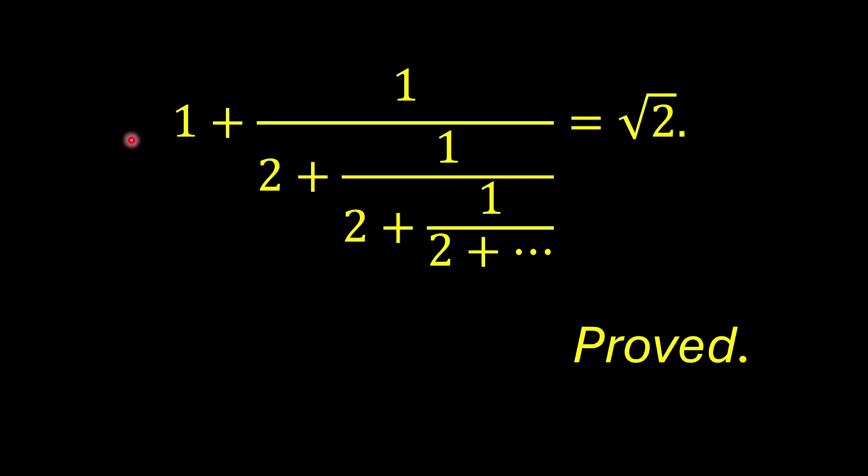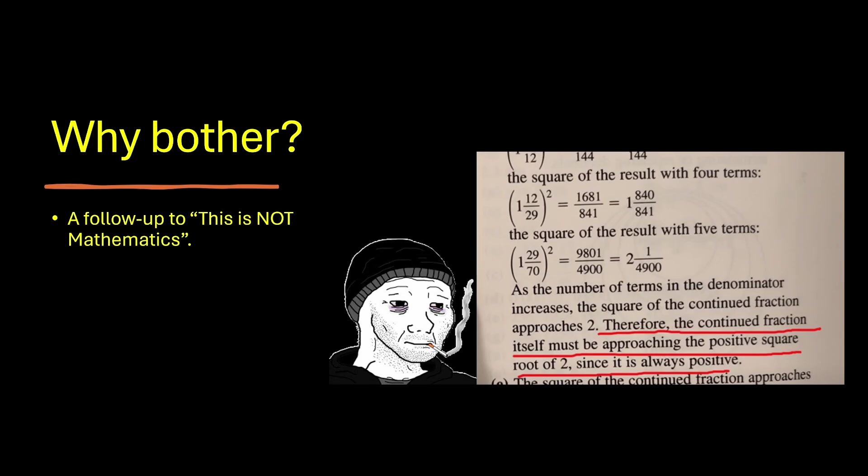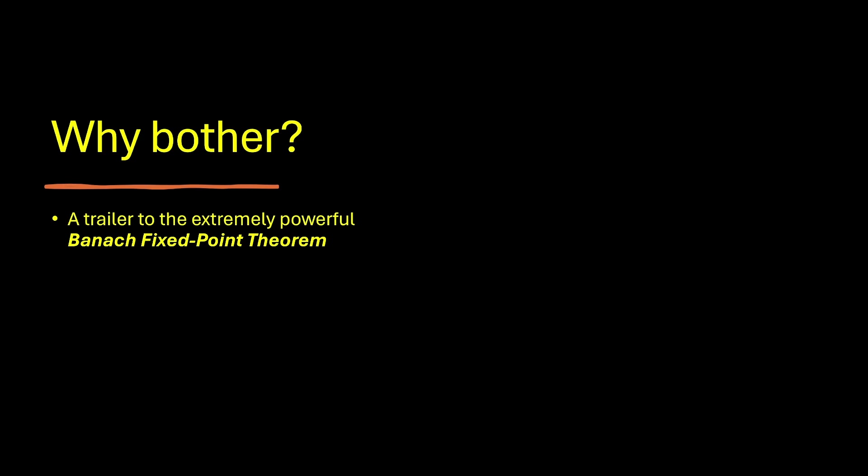In today's video, we're going to prove a continued fraction relation, which is 1 plus 1 over 2 plus 1 over 2 plus 1 over 2 plus dot dot dot equals the square root of 2. So first of all, why even bother? A bit of a motivation for today's task. This video is a follow-up to my previous video, This is Not Mathematics. Link in the video description, and hence the title of today's video. And the second, and a much more important motivation, is that this problem we're going to solve today can be seen as a trailer to the extremely powerful Banach Fixed Point Theorem.